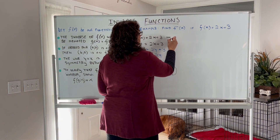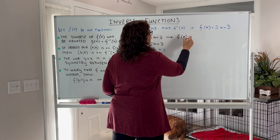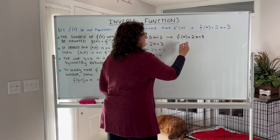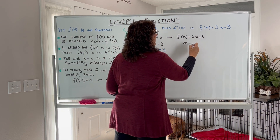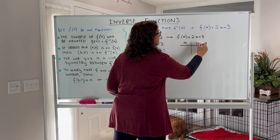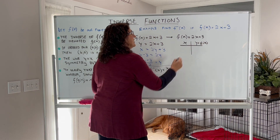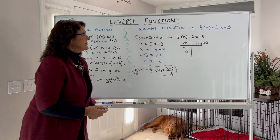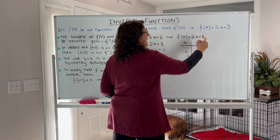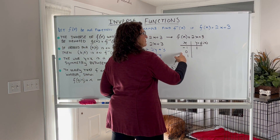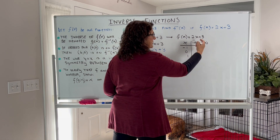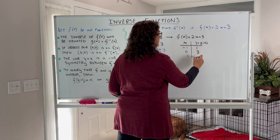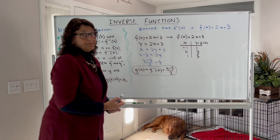Let's list some points on our function. Our function is 2x plus 3. We'll pick x values of negative 1, 0, and 1. When x equals negative 1, 2 times negative 1 plus 3 equals 1. When x equals 0, 2 times 0 plus 3 equals 3. When x equals 1, 2 plus 3 equals 5. So our points are (−1, 1), (0, 3), and (1, 5).